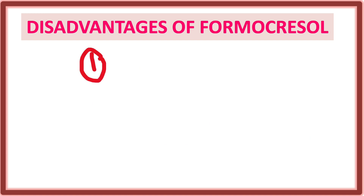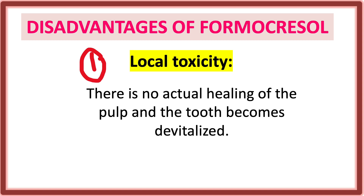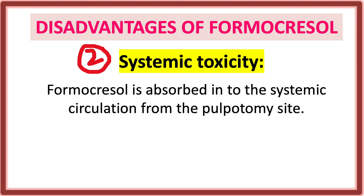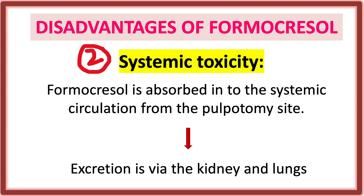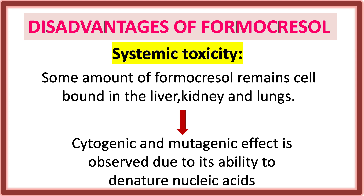The disadvantages of formocresol: first, local toxicity — there is no actual healing of the pulp and the tooth becomes devitalized. Second, systemic toxicity — formocresol is absorbed into the systemic circulation from the pulpotomy site and into many organs, with excretion via the kidneys and lungs, though this is rare. Some amount remains bound in the cells of the liver, kidneys, and lungs, causing cytogenic and mutagenic effects by denaturing nucleic acid.